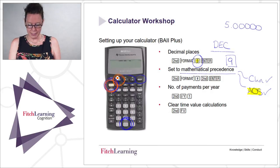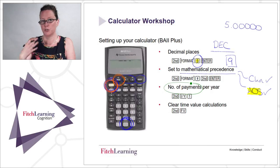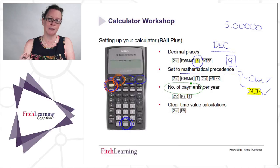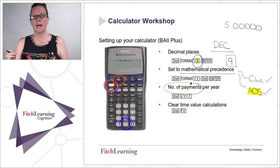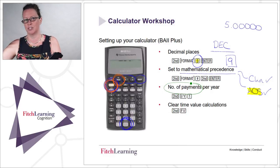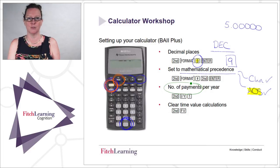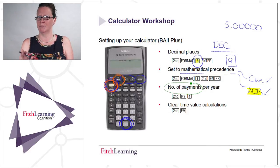The other thing you need to make sure is that the number of payments per year is set to one. When you move through your studies, you'll come across semi-annual and quarterly payments — but this still needs to be set at one. You can then do your quarterly and semi-annual payments as the tutor or books tell you to, but this needs to be set as one, which is slightly unintuitive.